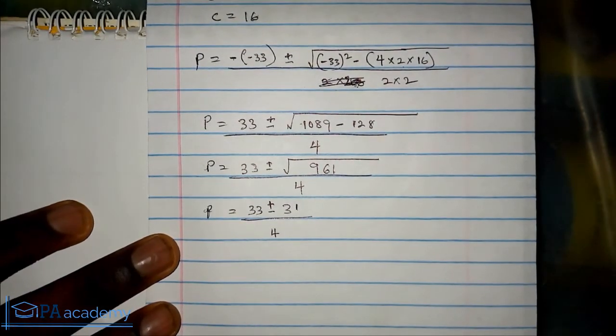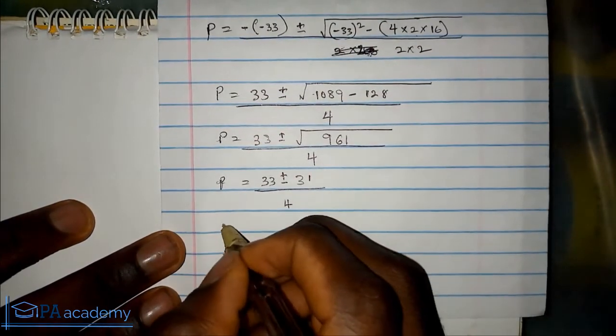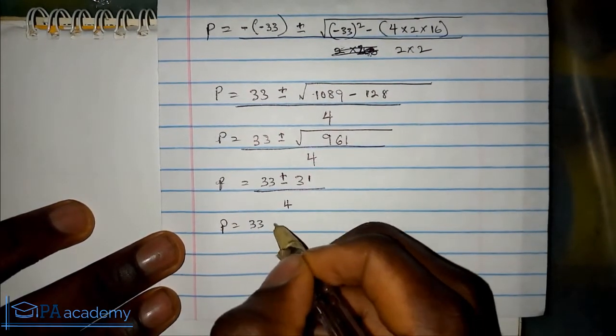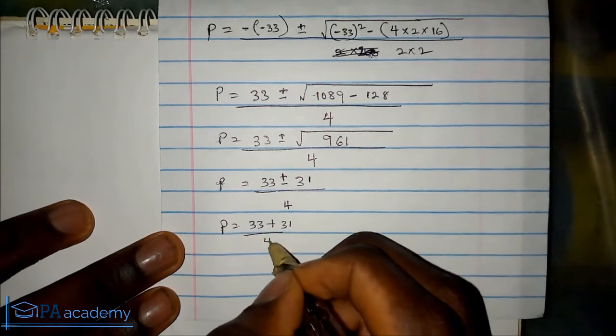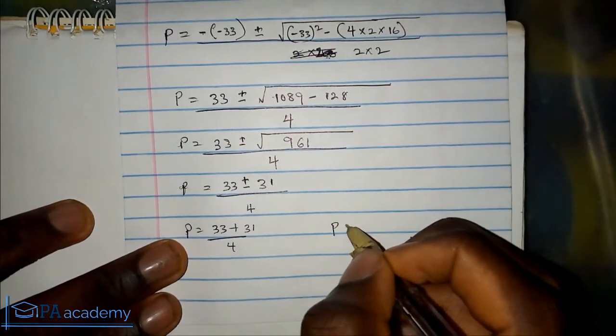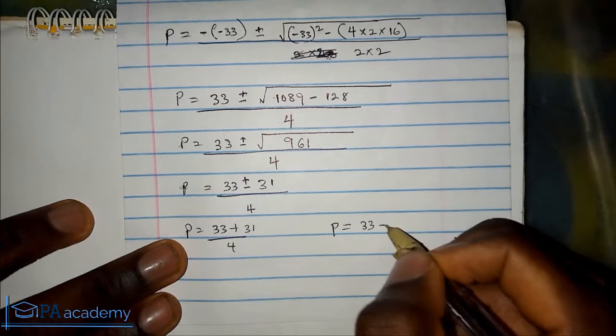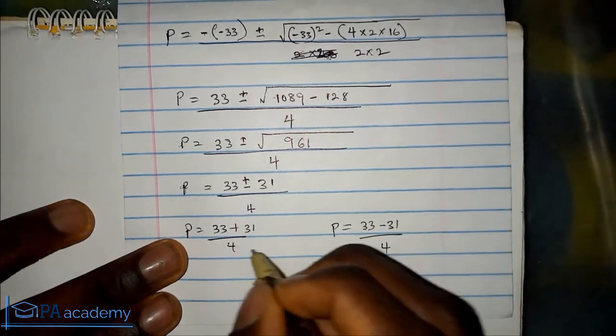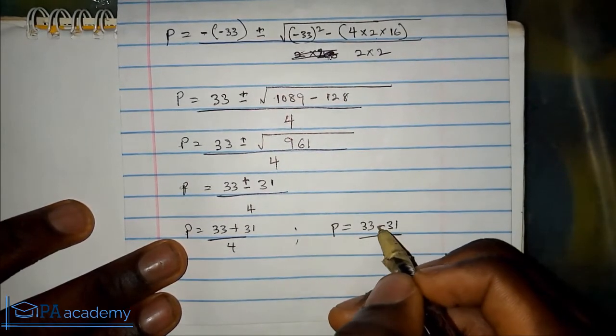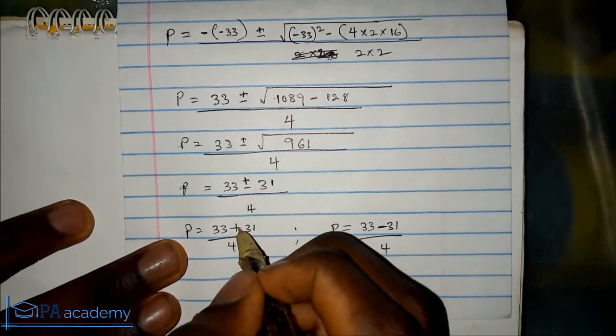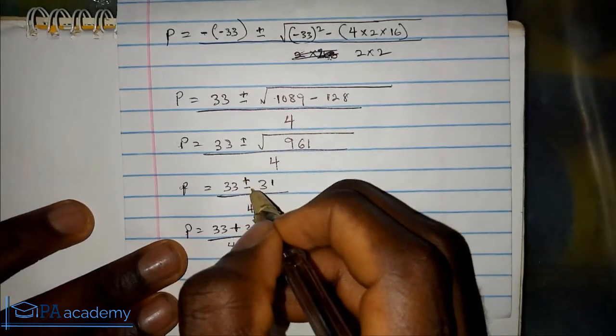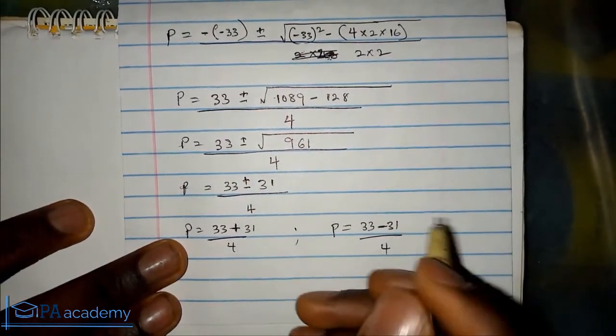Now the next thing we are going to do is split it apart, so p equals 33 plus 31 over 4. Then p also equals 33 minus 31 over 4. The difference between these two is the sign, here we have minus, here we have plus, because right here we have plus or minus. So what we did was break it apart.